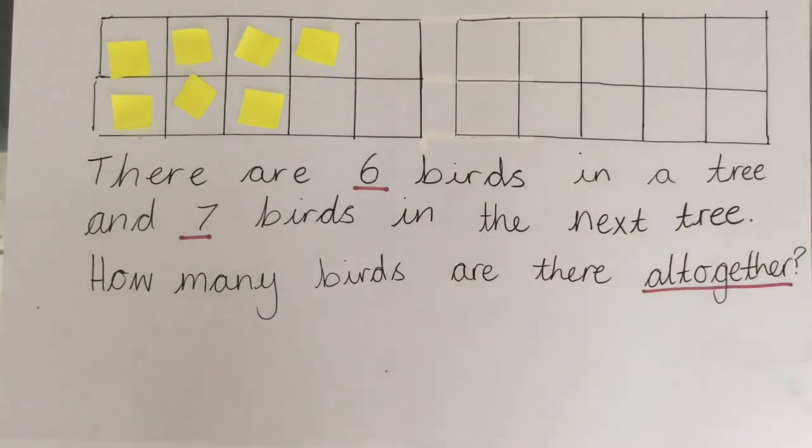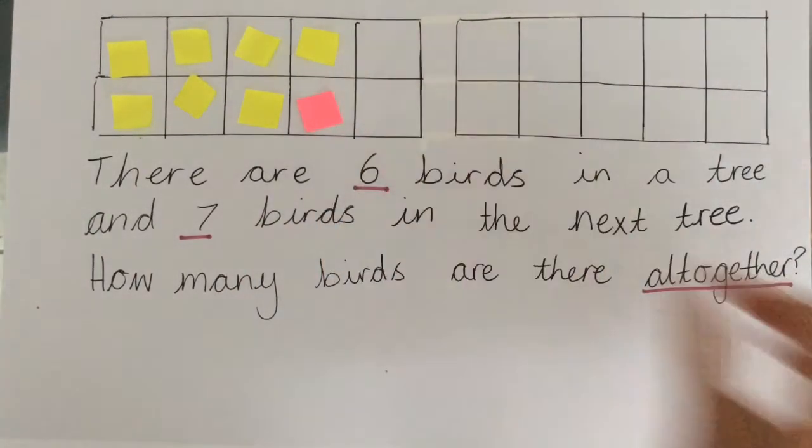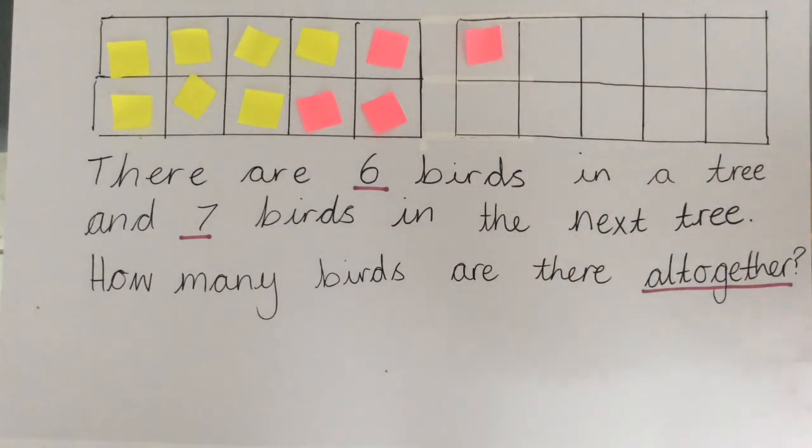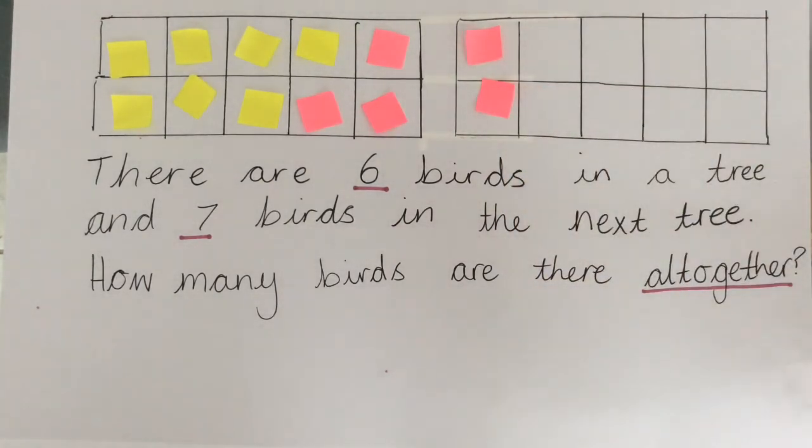And because it's all together, we now need to add the next lot. So six, let's choose another colour. One, two, three, four, five, six.